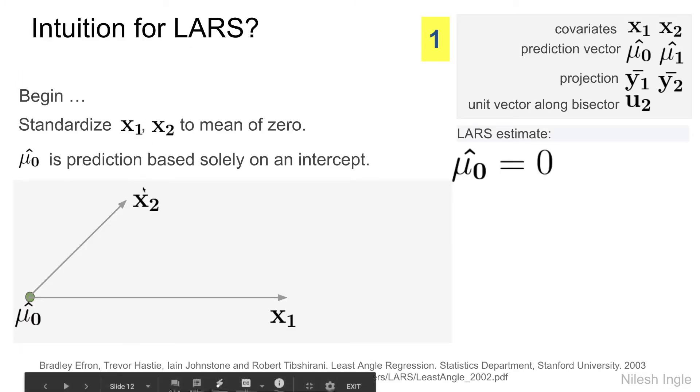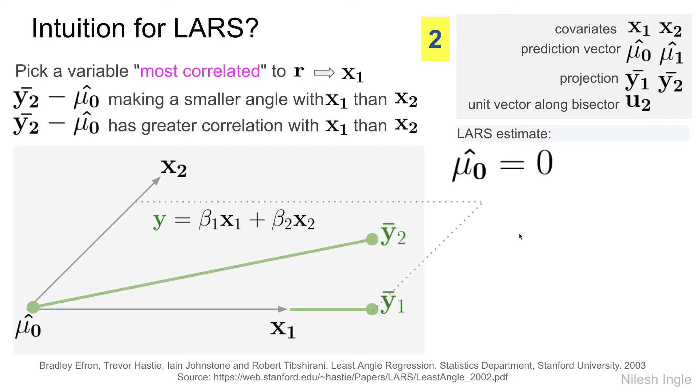This is our linear space with two vectors only, x1 and x2, and we start with the prediction where mu hat is set to 0 as shown here. Then we pick the most correlated variable to the residual. In this case, we're picking x1 because the residual r that is shown here is equal to y2 minus mu hat of 0, which is making the smaller angle with x1 compared to x2 as shown here. Therefore, this particular residual has greater correlation with x1 than x2.